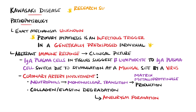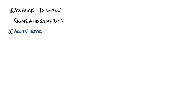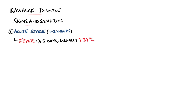A recent study in Italy has shown a possible correlation between COVID-19 and Kawasaki disease, quoting that the incidence of a Kawasaki-like presentation in their population was 30 times greater since the COVID outbreak compared with the previous five years. The signs and symptoms follow stages. The acute febrile stage lasts around one to two weeks and is characterized by a high fever of at least five days. In most instances, this fever is above 39 degrees Celsius.